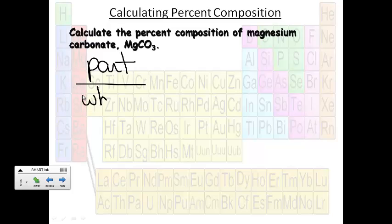So we're going to do each part that's magnesium, each part that's carbon, and each part that's oxygen.